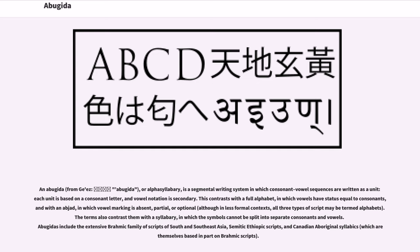This contrasts with a full alphabet, in which vowels have status equal to consonants, and with an abjad, in which vowel marking is absent, partial, or optional, although in less formal contexts, all three types of script may be termed alphabets.